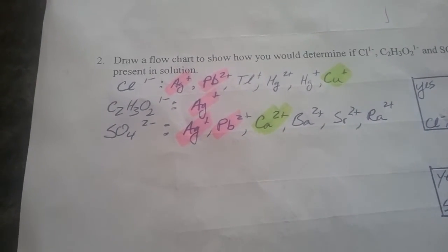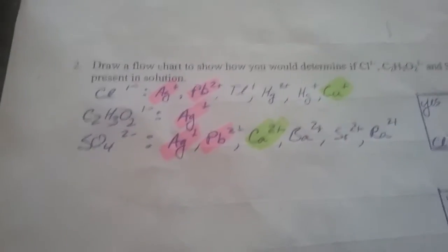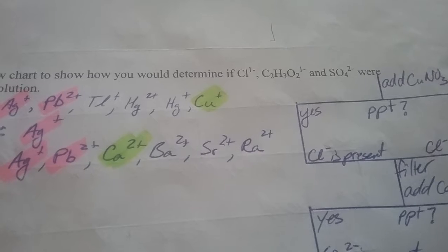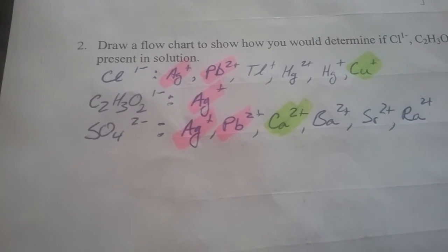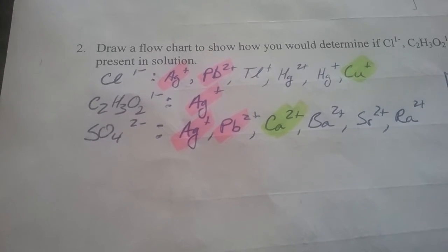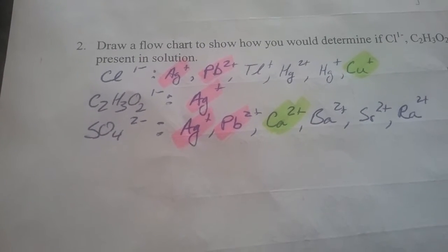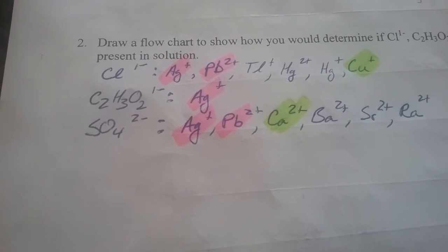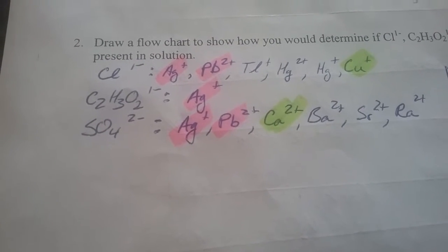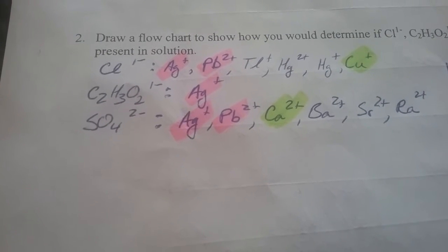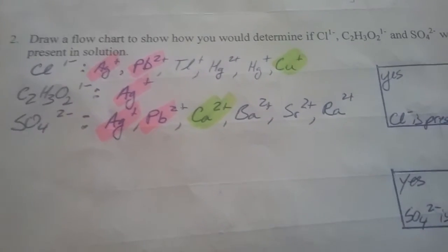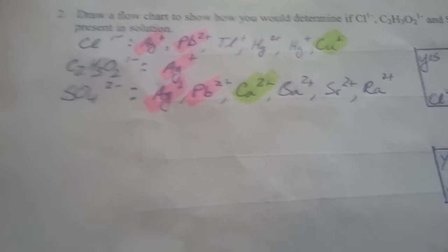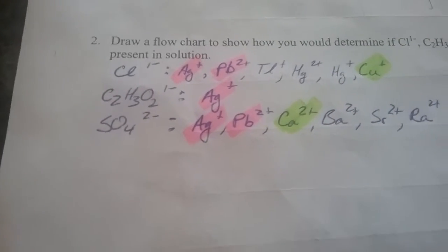Step one: make your list. We have chloride ions, acetate ions, and sulfate ions. We have to make our list of ions that are going to create a precipitate reaction with each. Chloride ions will make precipitate reactions with silver, lead(II), tellurium, mercury(II), mercury(I), and copper(I). Acetate has a small list — just silver. And sulfate makes a precipitate reaction with silver, lead(II), calcium, barium, strontium, and radium.